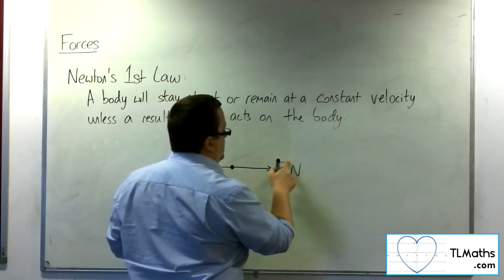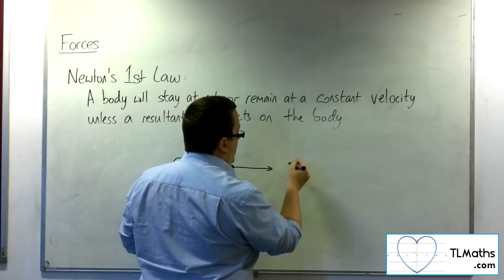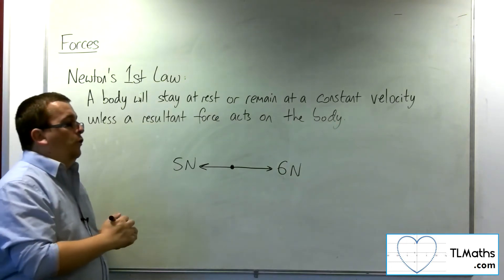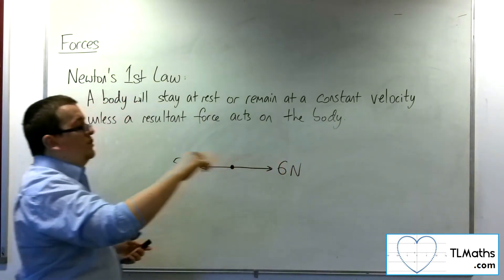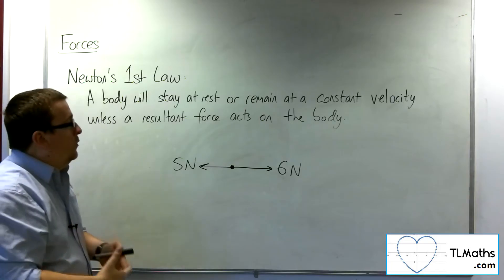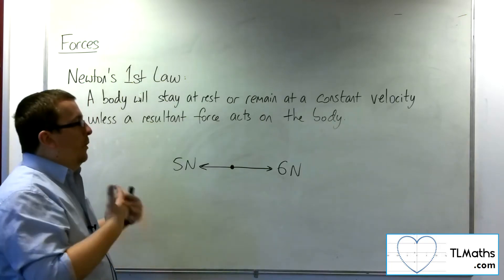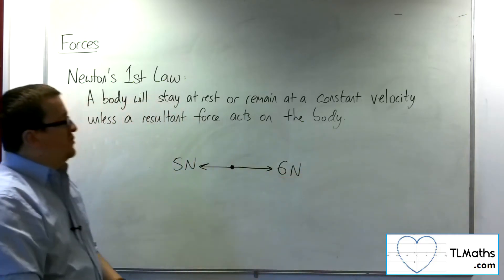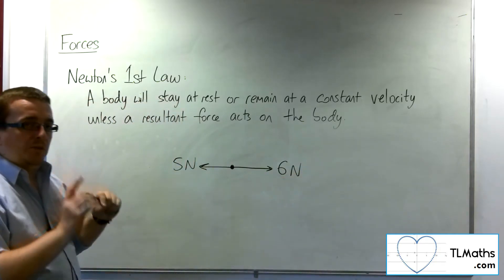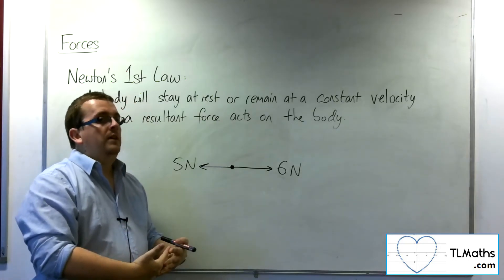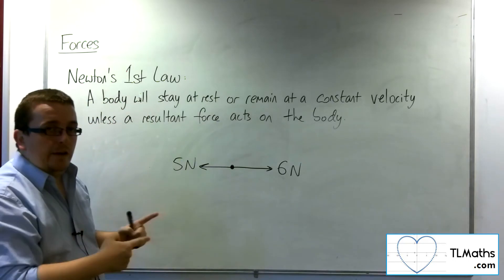The moment that this is, let's say, 6 newtons, there is a greater force pulling it to the right. And now it has a resultant force of 1 newton, positive 1 newton, because we'll take that as the positive direction. And subsequently, because there is a non-zero resultant force, this particle will accelerate.